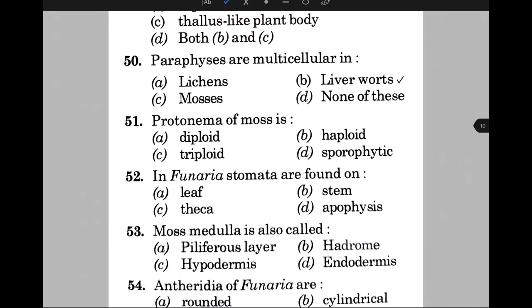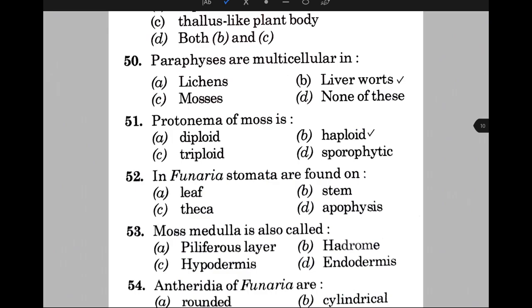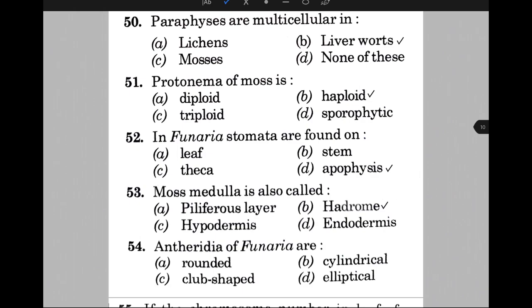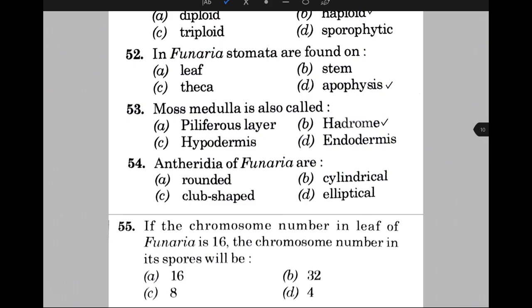In Funaria, stomata are found on — the answer is option D, that is apophysis. Moss medulla is also called — the answer is B, that is hadrom. Antheridia of Funaria are called — the answer is C, that is club-shaped.